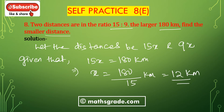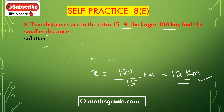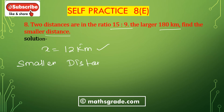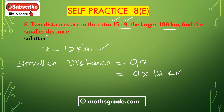The value of x is 12 kilometers. Now finding the smaller distance: the smaller distance is 9x, so 9 multiplied by 12 kilometers, which equals 108 kilometers. Therefore, the smaller distance is 108 kilometers.